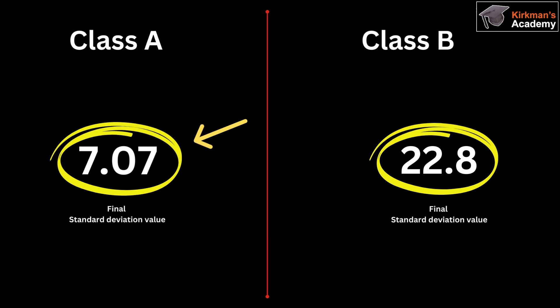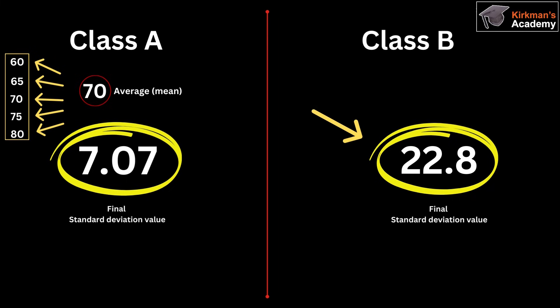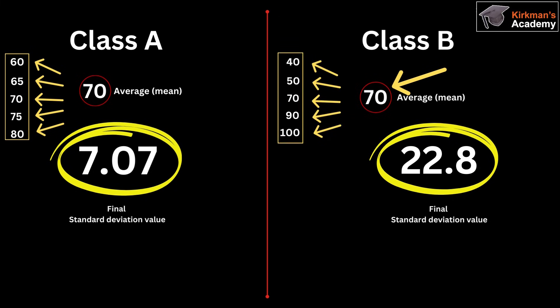Class A's lower number means that each of the test results are not too much different from the average, or mean, of them all. So that means that the higher the number, the values have a greater difference, or variation, from each of the test results.